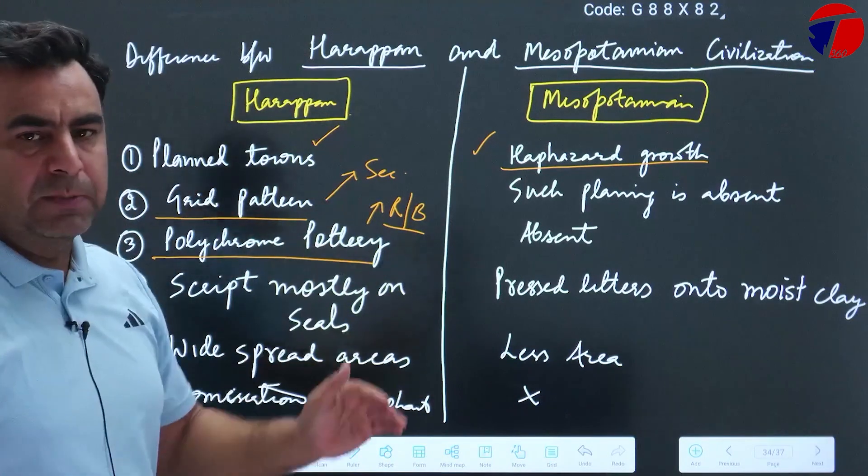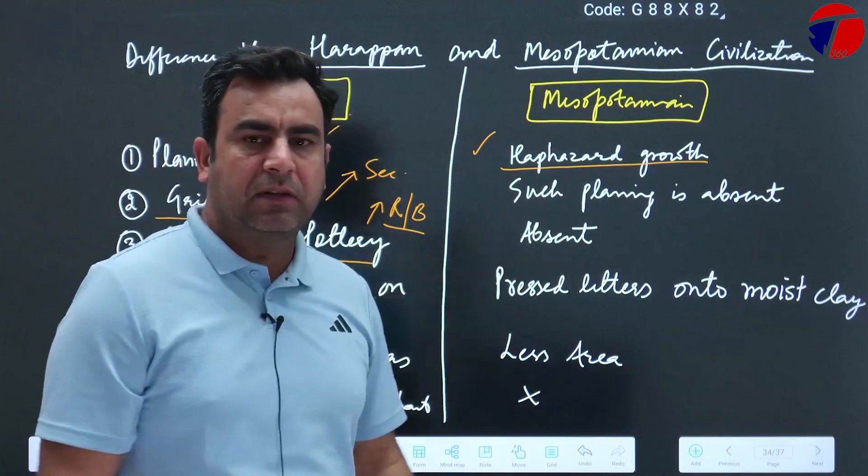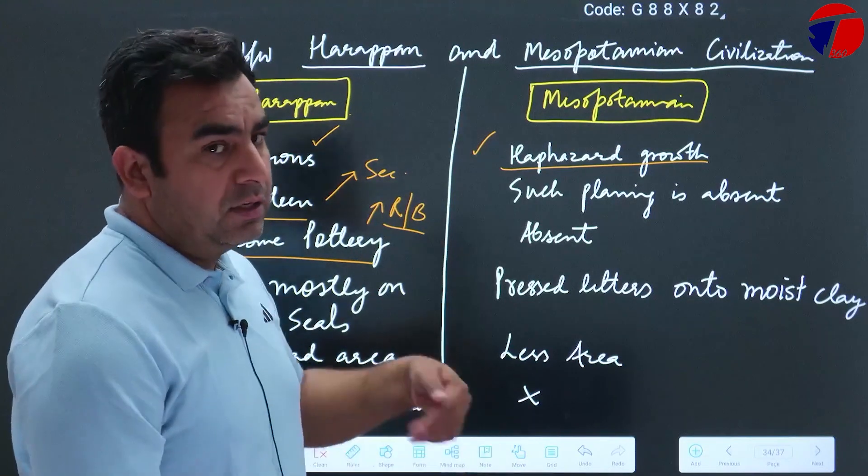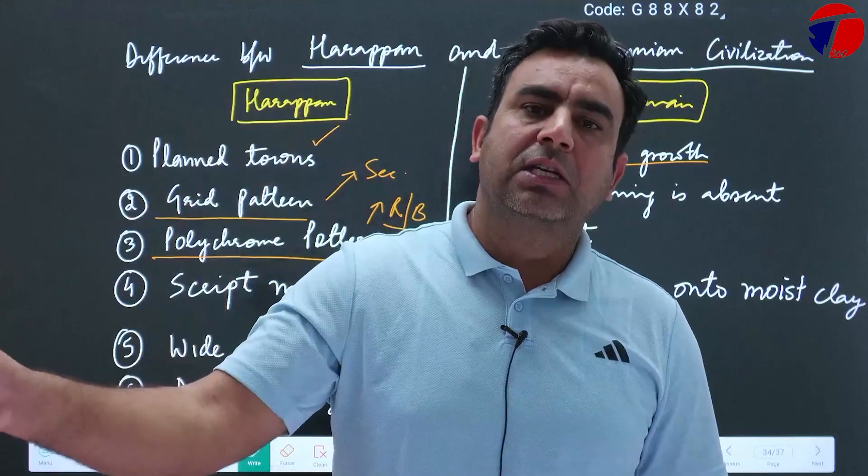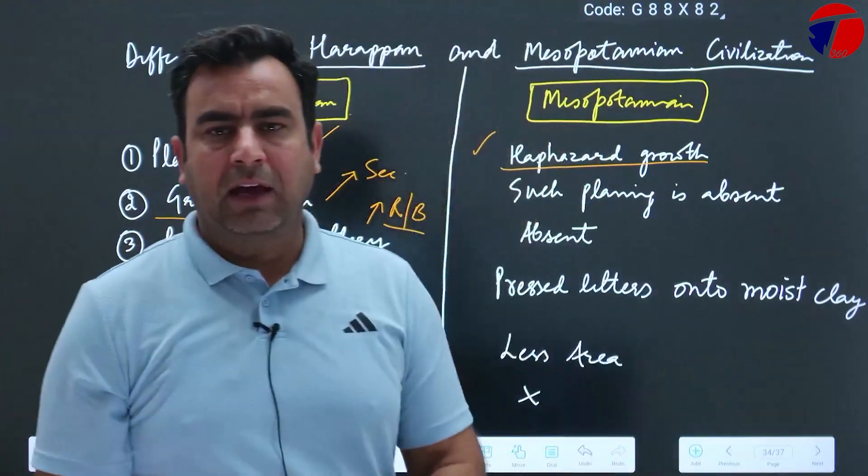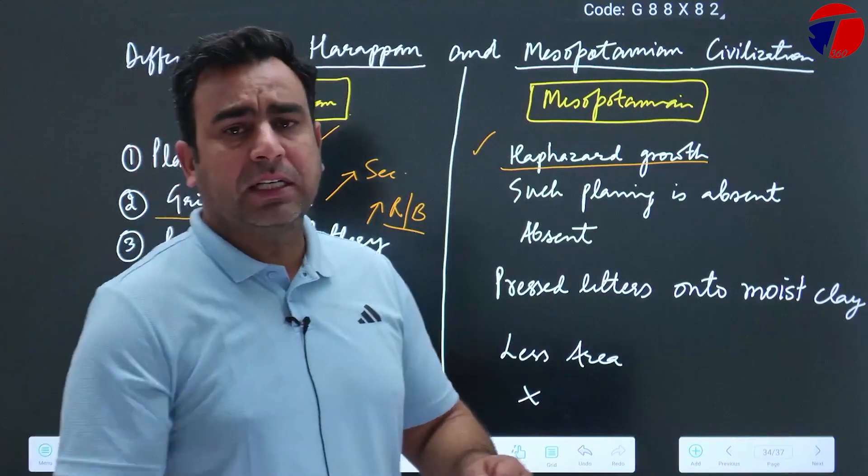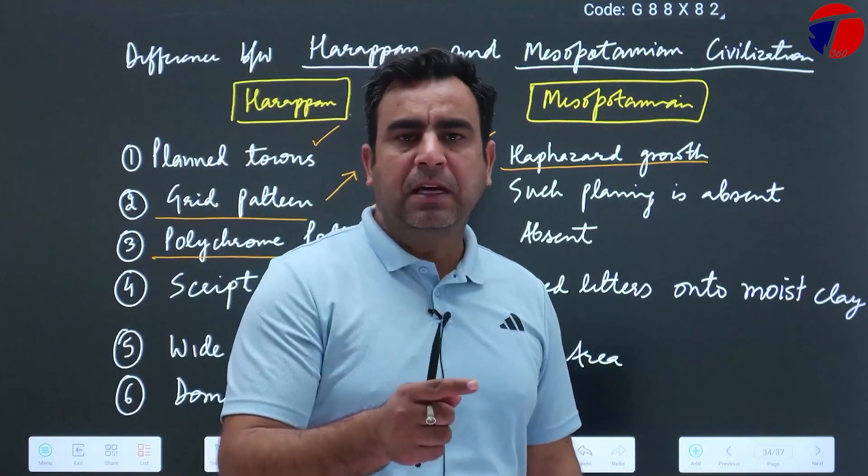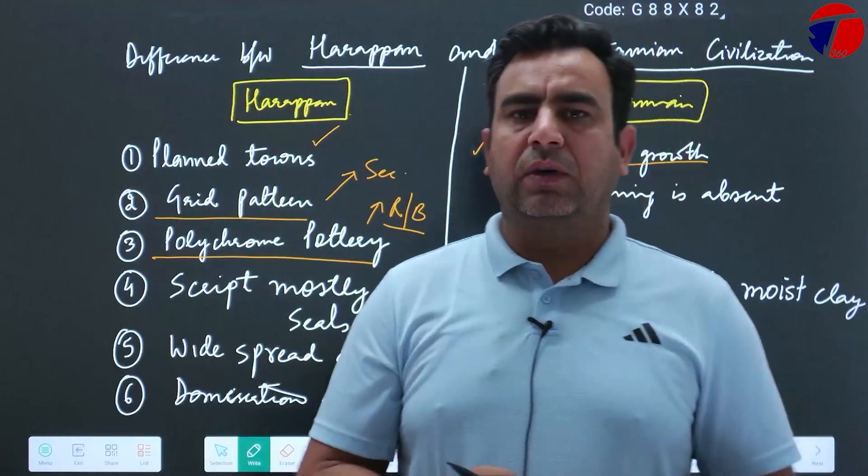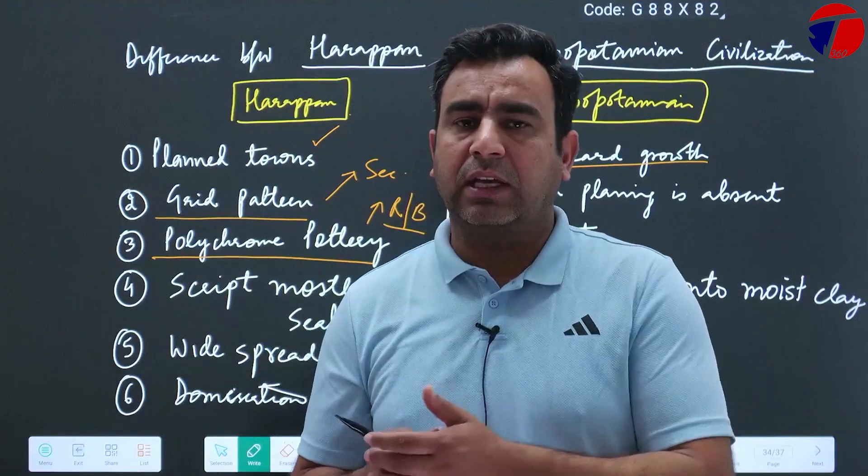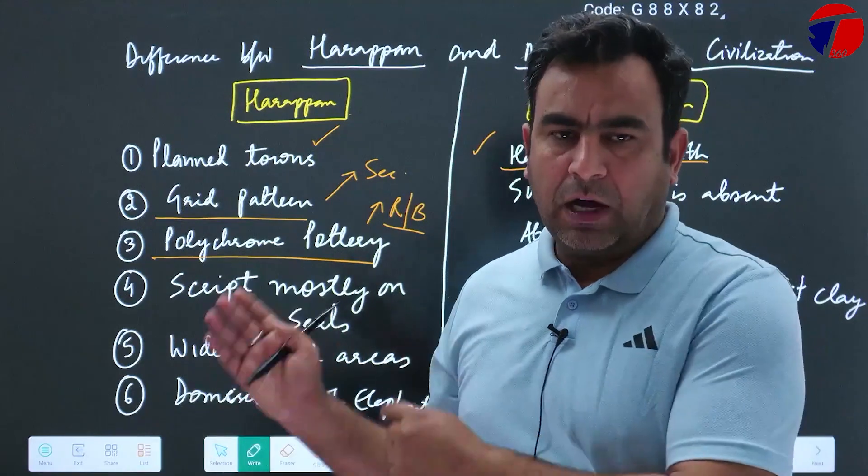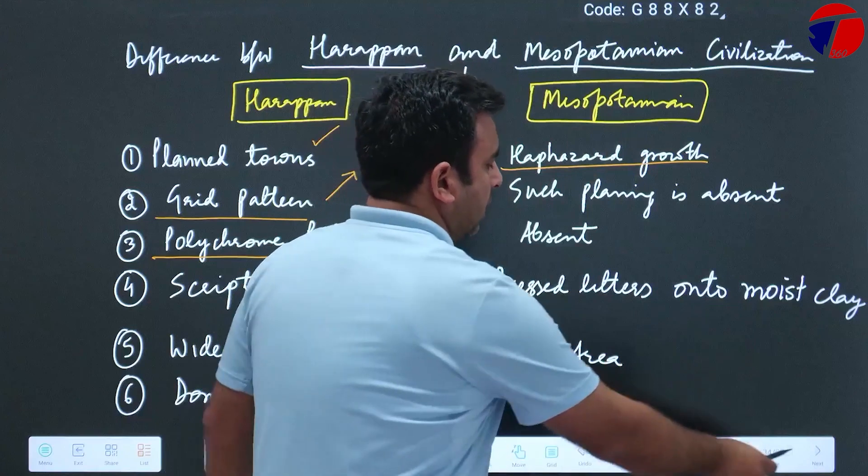The Harappan area was more widespread as compared to Mesopotamian civilization. Domestication of elephant was there; their domestication of elephant is absent. Their domestication of horses was there; here horse domestication is absent. There were certain scholars like Mortimer Wheeler and James who said that Harappan civilization's origin was foreign origin.